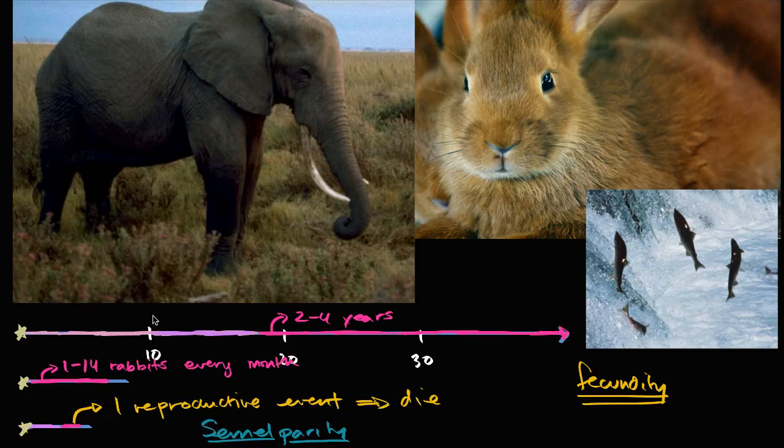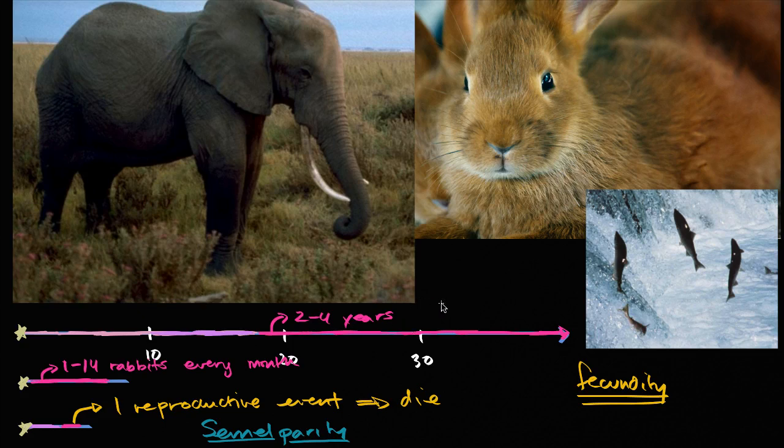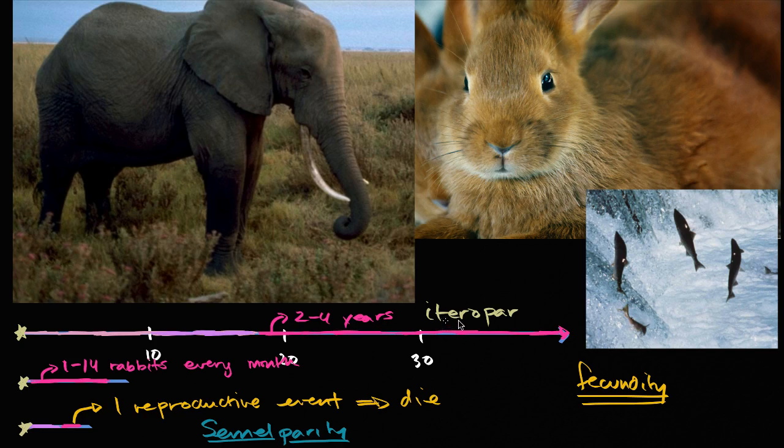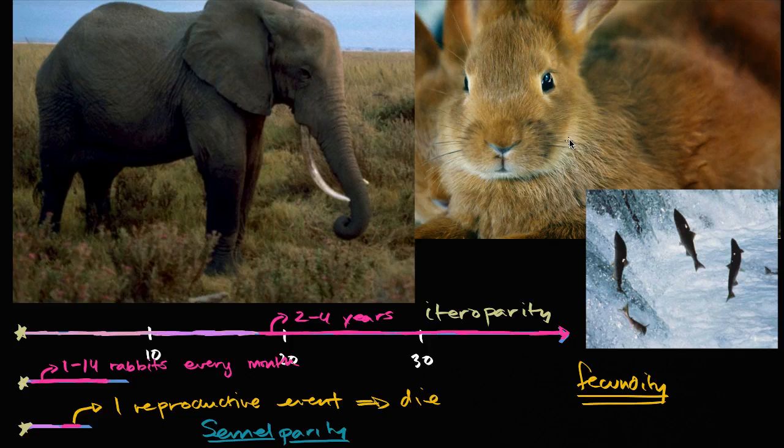And you might say, okay, if that's semelparity, what would we call an elephant or rabbits? Rabbits and elephants can have multiple reproductive events. Well, that is called iteroparity. Iteroparity. You might have heard the word iterate. That means to repeat something or to do something over and over again. Itero is the root for, it means repeat. So iteroparity, beget repeatedly. And that's what animals like elephants, and for sure rabbits are actually doing.